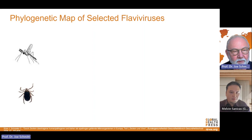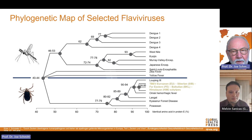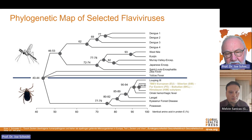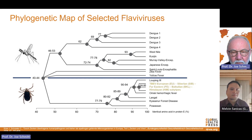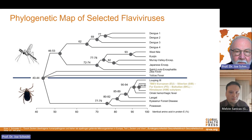For flaviviruses — and the dengue virus is a flavivirus — there are two ways of transmission: mosquito-borne and tick-borne. Among the tick-transmitted flaviviruses, particularly noteworthy is tick-borne encephalitis virus, called Frühsommer-Meningoenzephalitis or FSME in German-speaking countries, but also Omsk hemorrhagic fever, Kyasanur forest disease in India, Powassan in the United States, and many others.